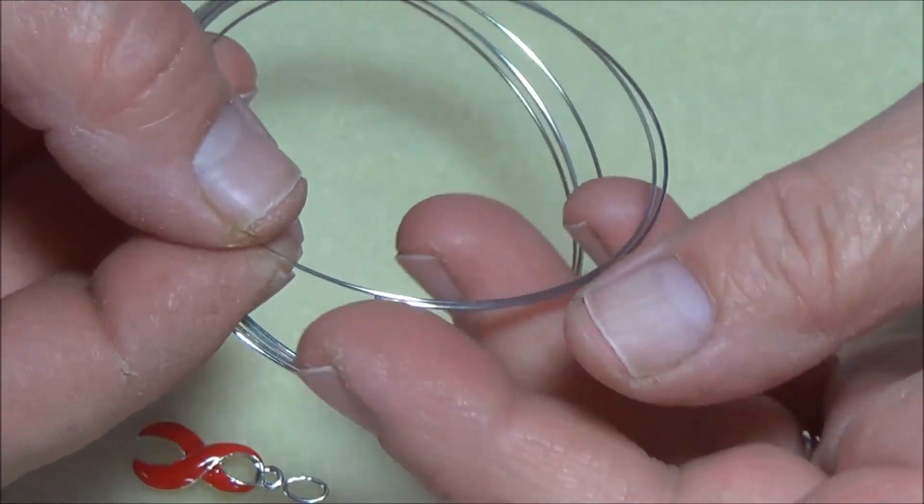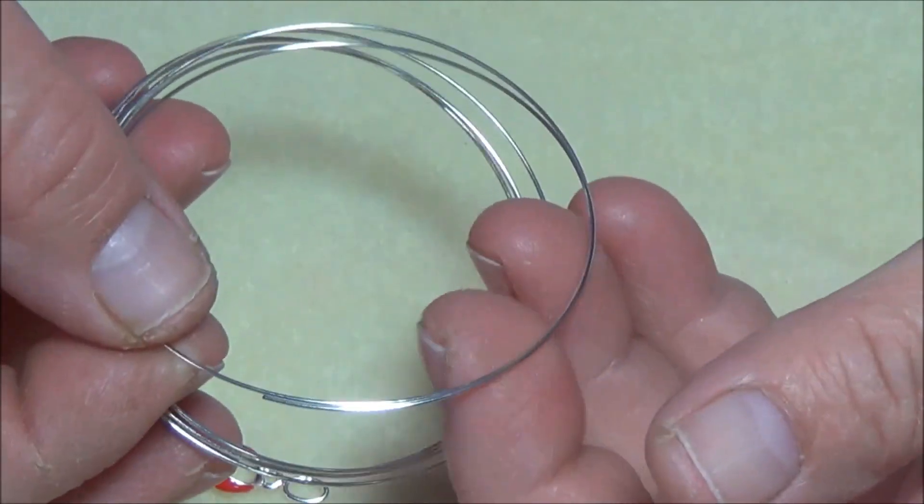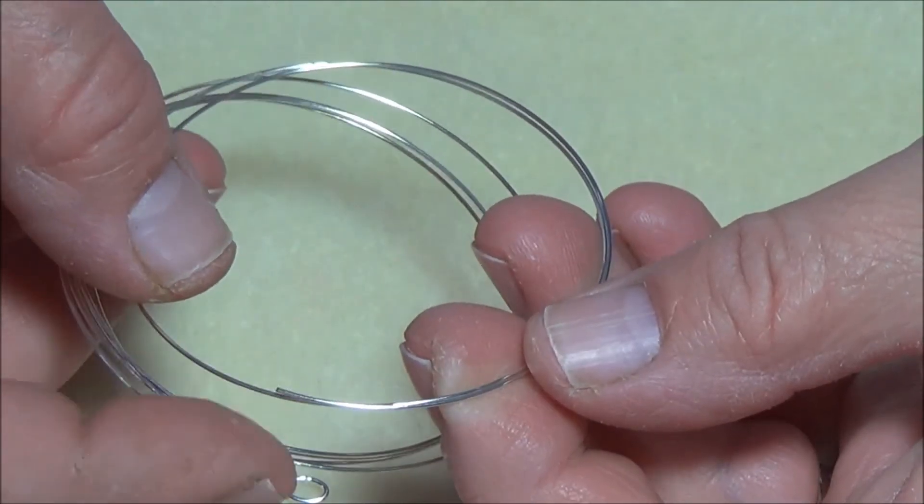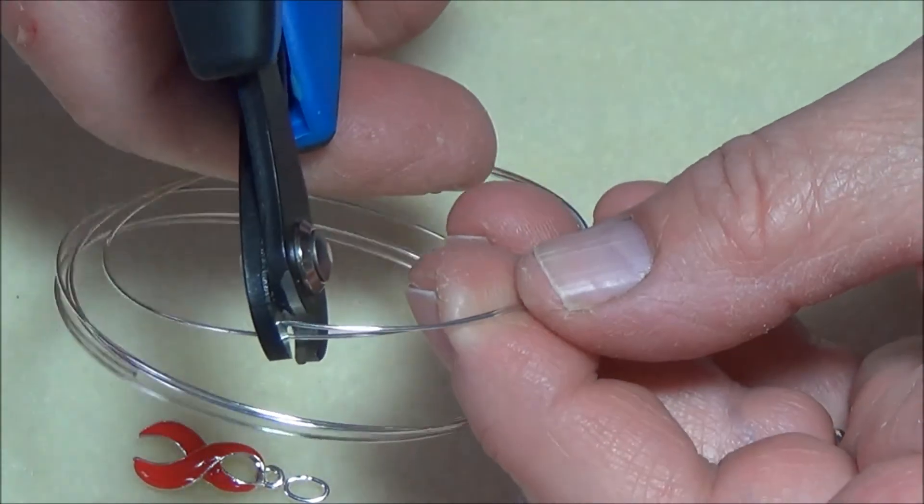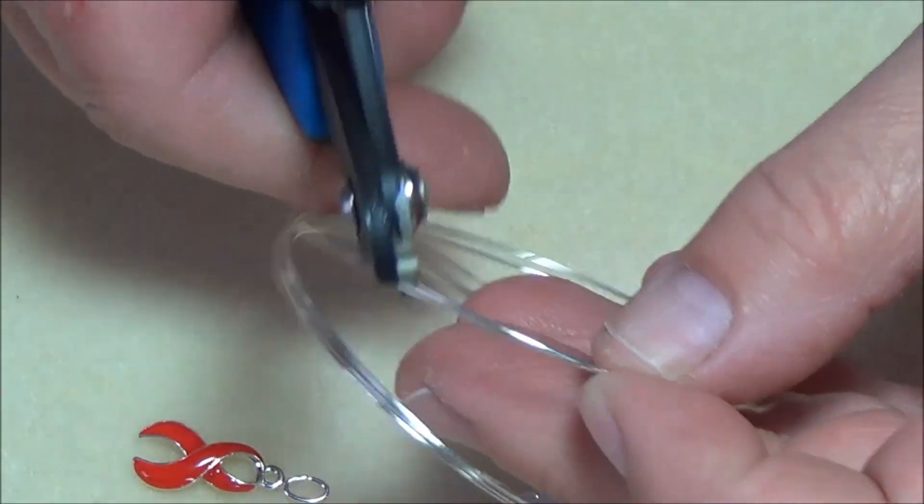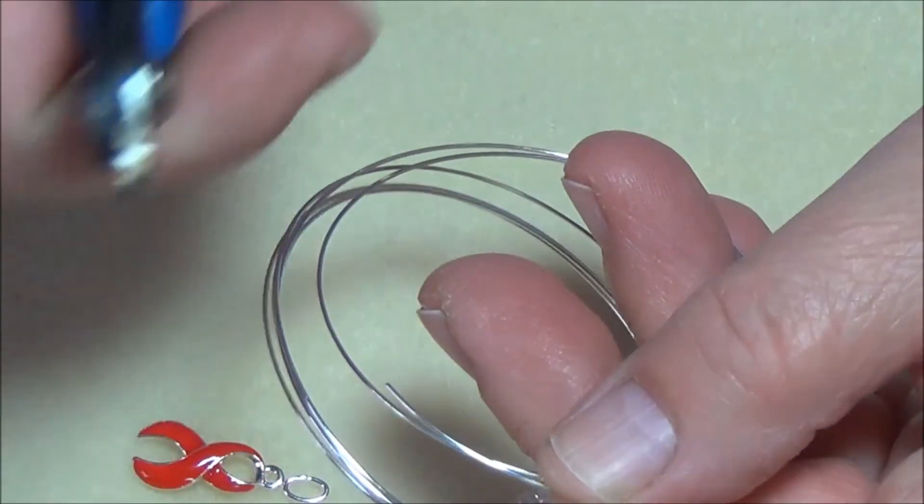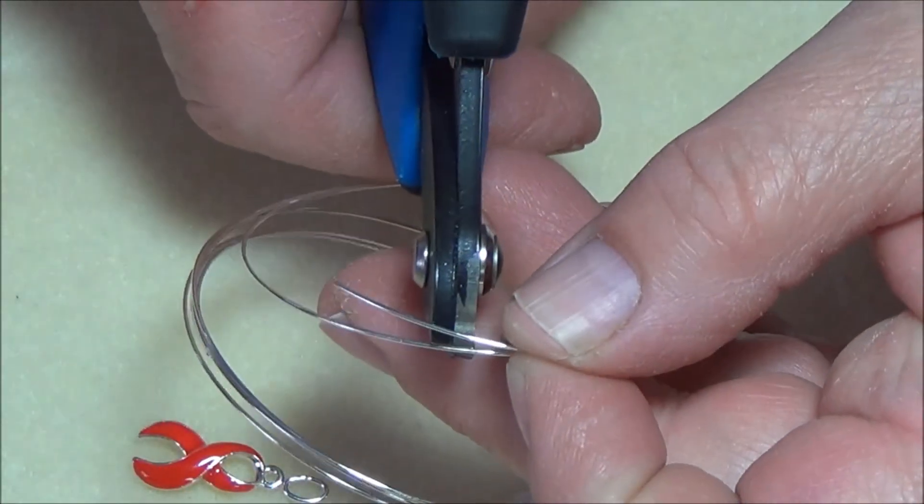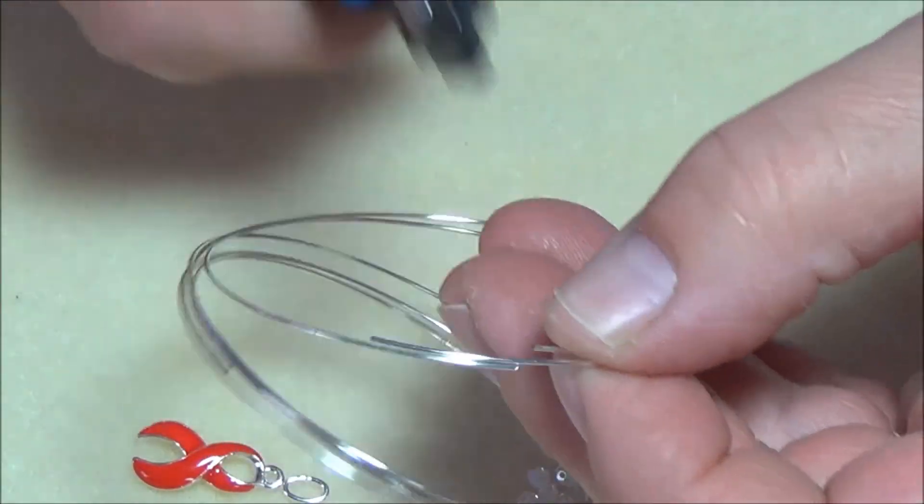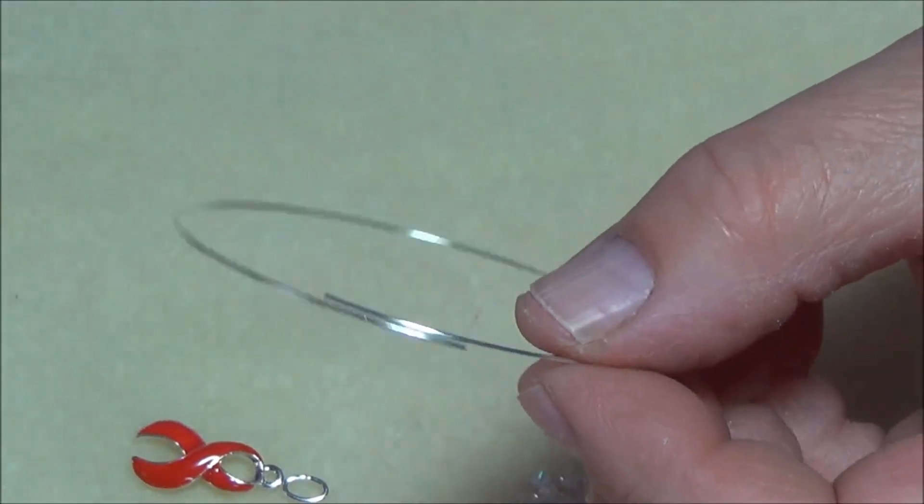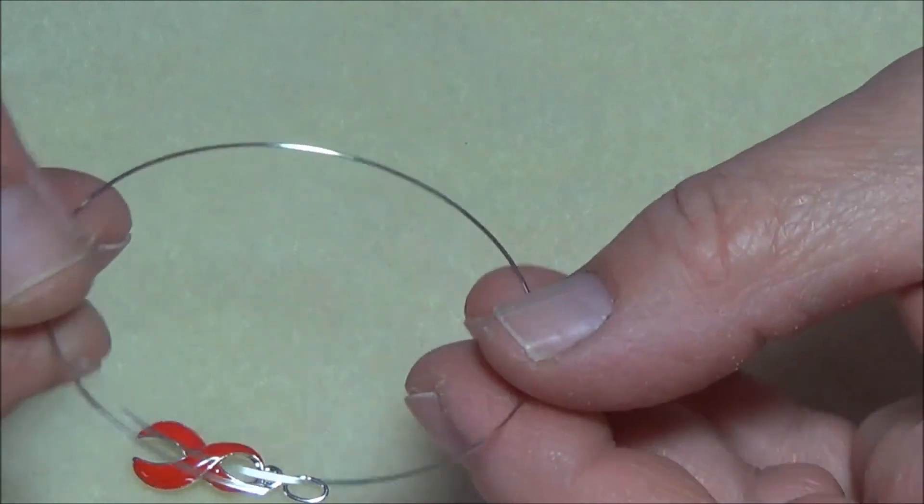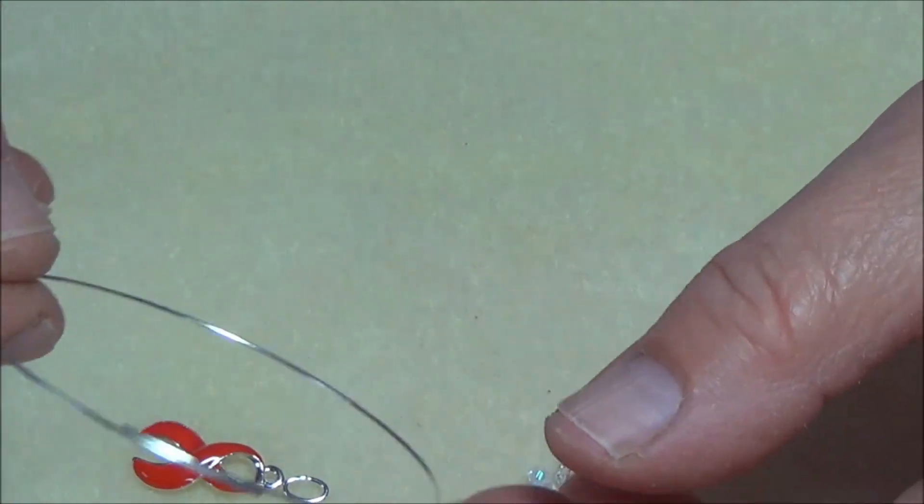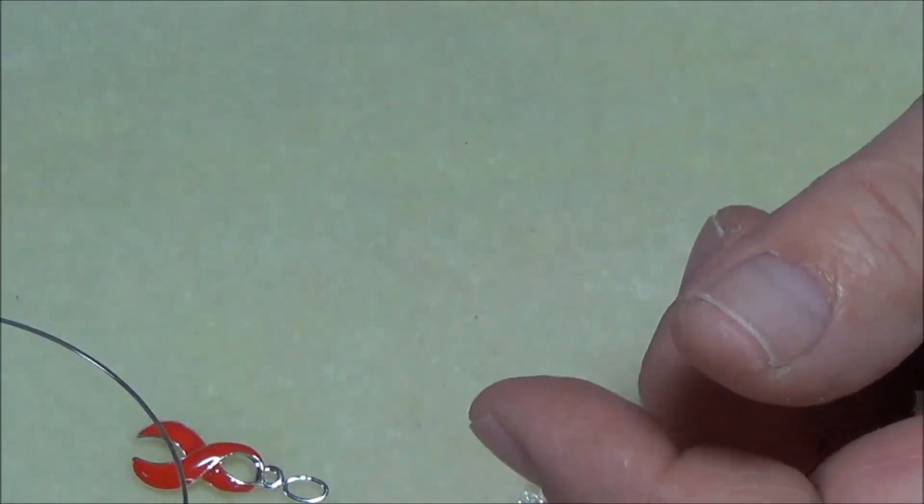See how your memory wire overlaps here. Take your memory wire cutters and just cut it just a little bit while it's overlapped. So I'm saying maybe a half inch and trim it off. So it's overlapping about a half an inch. You see that? You really don't want it any bigger than that. And if you have a really tiny wrist that's going to work out perfect.